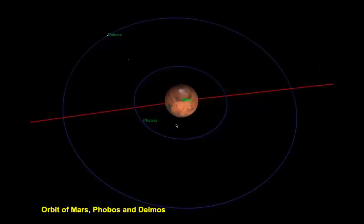Mars has moons — Deimos and Phobos. We here on Earth have just one moon.